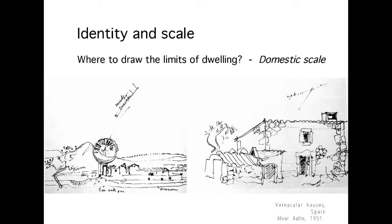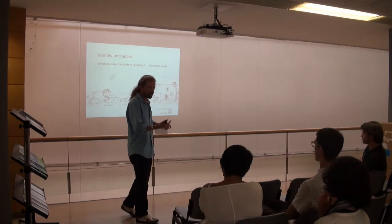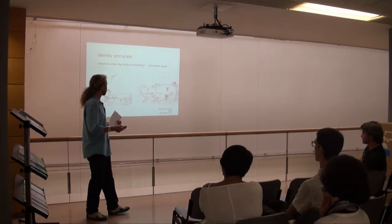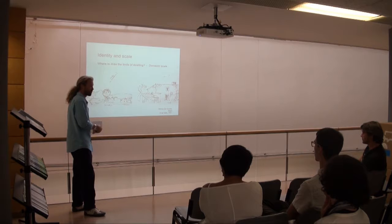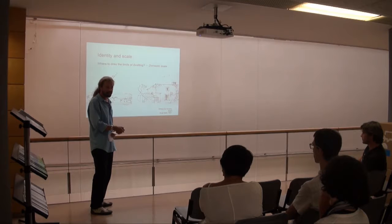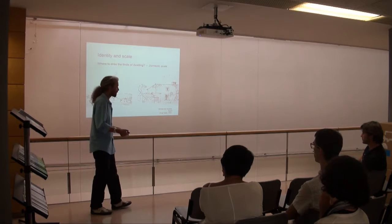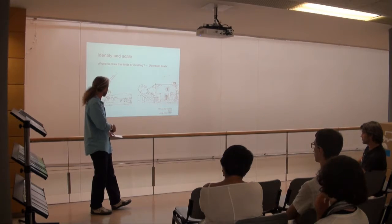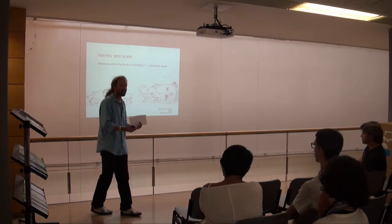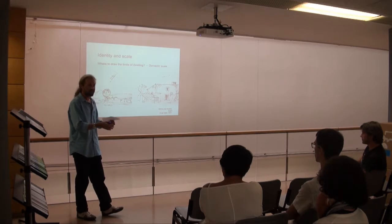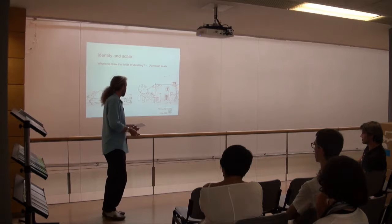So, thinking about limits: one thing is how do we make limits? Do we separate out the senses — acoustic, smell, sight? But also, where do we put those limits? Here are drawings by Aalto from the 1950s of vernacular architecture in Spain — small farms, farmsteads, spaces for animals — because a dwelling is more than just a place with a roof. It has to have the other functions which that kind of family and society require, in that location.